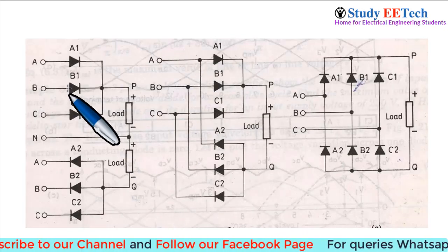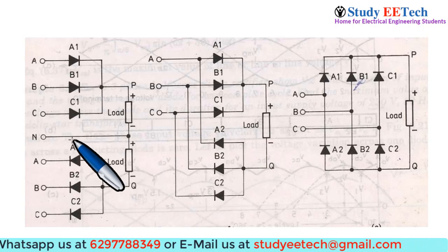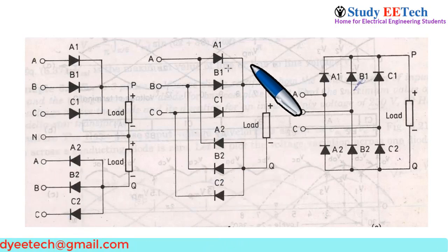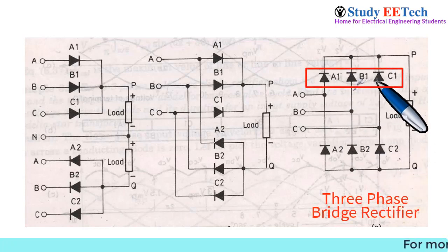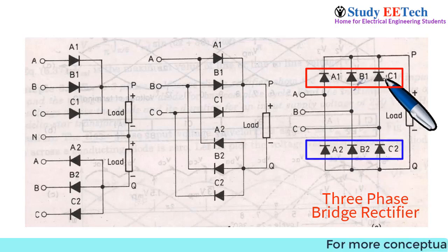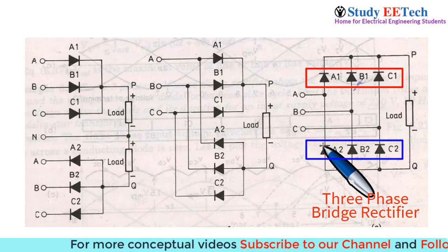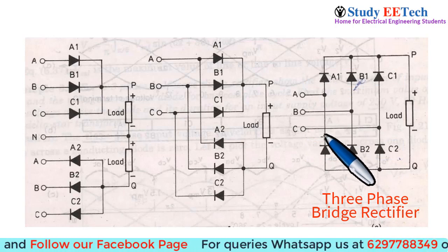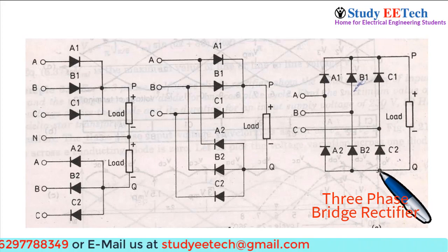Now we can join the two circuits — common cathode configuration and common anode configuration — together and hide the neutral terminal. Connecting A to A, B to B, C to C in this way, we make the three phase bridge rectifier circuit. The three phase bridge rectifier has an upper group of diodes A1, B1, C1 with common cathode, and a lower group of diodes with common anode. In the first leg A phase voltage is connected between A1 and A2, B between B1 and B2, and C between C1 and C2.